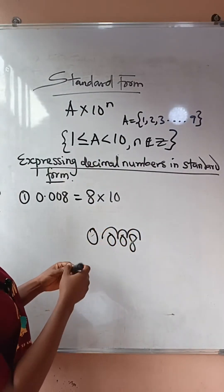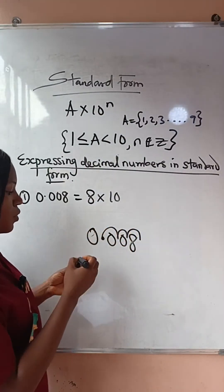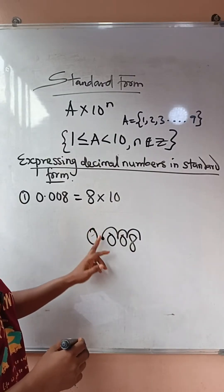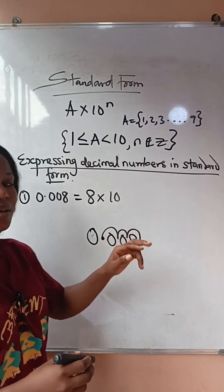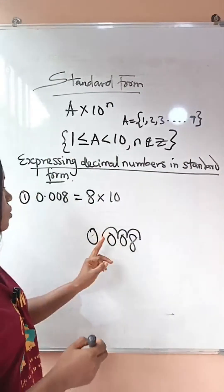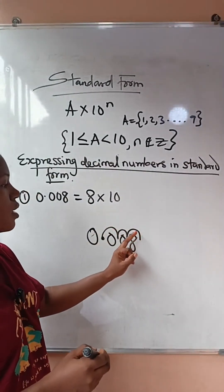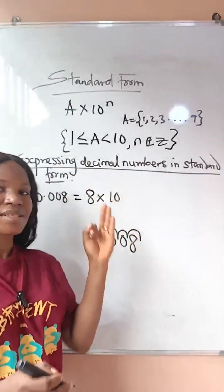Now this particular decimal, you can see where the decimal point is. And to get to our A, we shifted it to the right three times. So one, two, three, meaning that our N will be negative three.